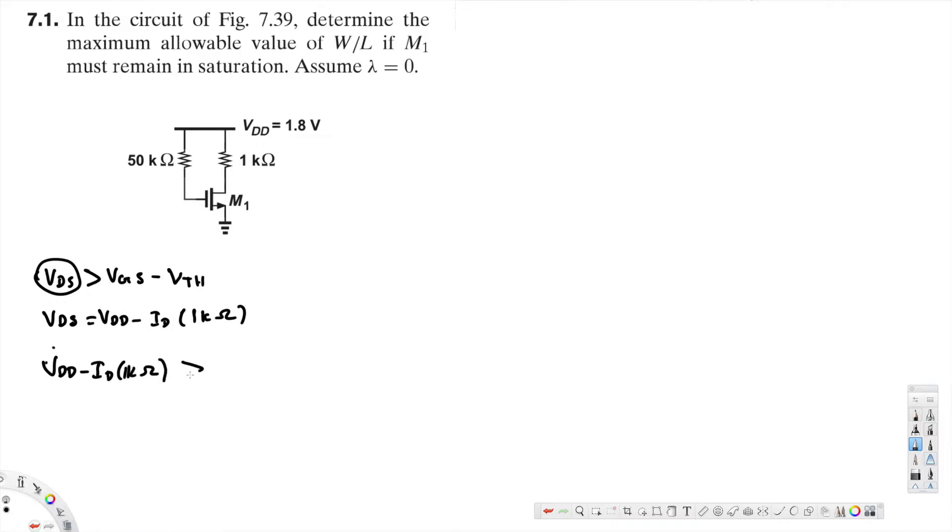This should be greater than VGS minus V threshold. Now if we rearrange everything in terms of ID, the equation will become ID should be less than...